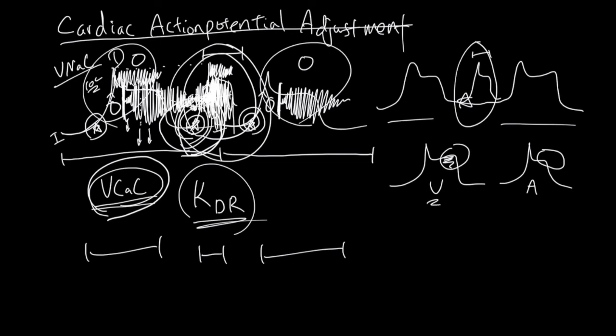And the difference between ventricular and atrial ones is also a difference in the VCAC and then the delayed rectifiers. For the ventricular one, there's more VCAC than the atrial one.